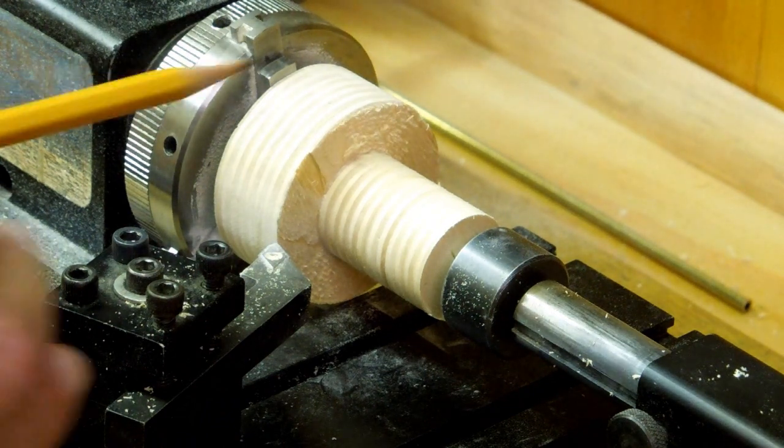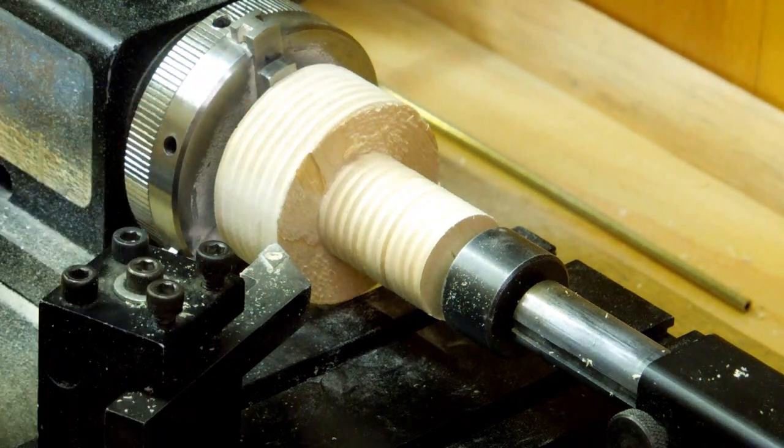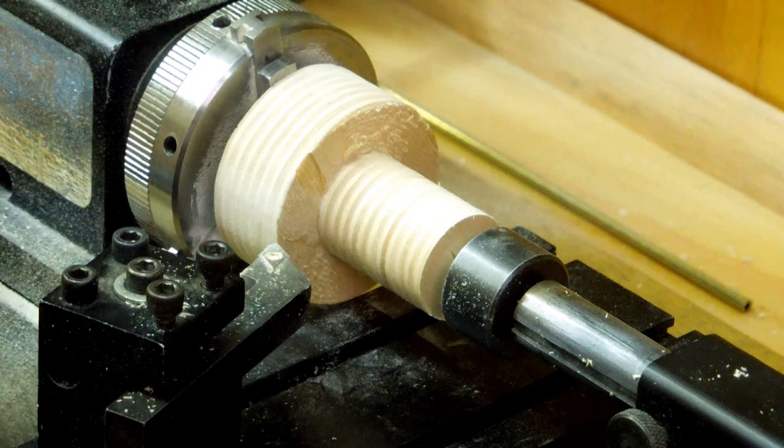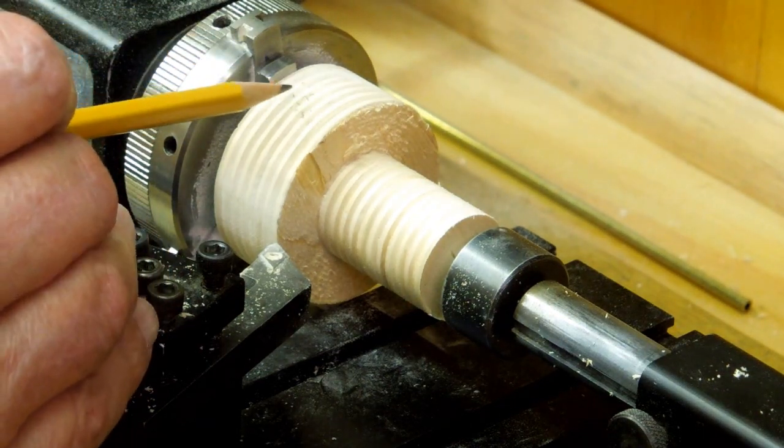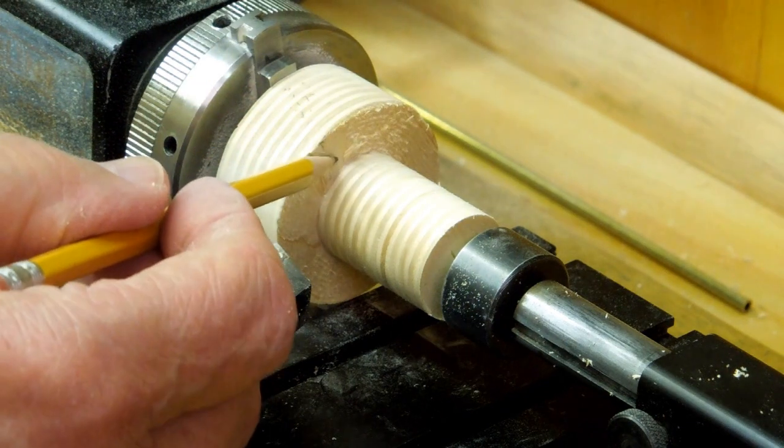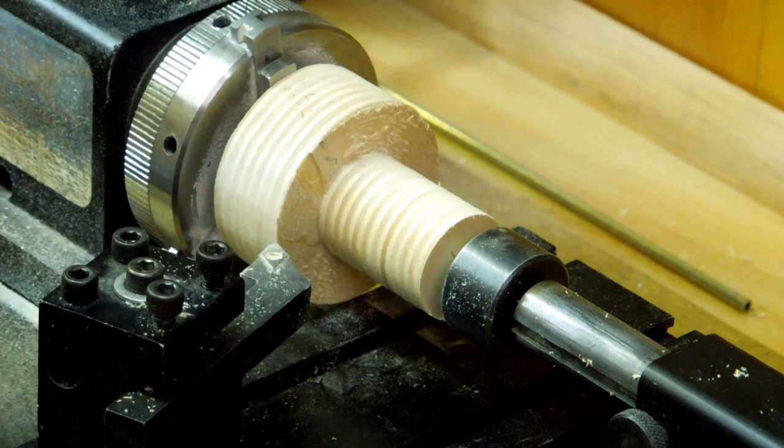Now there's a lot of material to remove right in here. So what I'm going to do next is what I call stair stepping. I'm just going to create a series of ledges or steps to get from this diameter to this diameter as evenly as I can. I'm just eyeballing that.